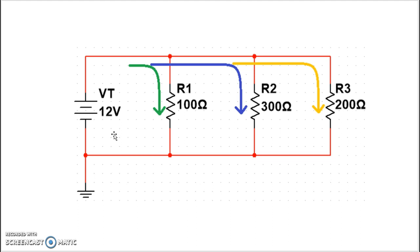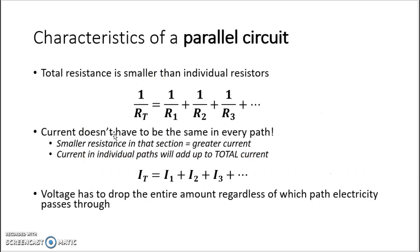Some characteristics of a parallel circuit: with series resistors, we added them up — 100, 300, and 200 ohms gave us 600 ohms total. In parallel, the resistance is actually smaller. The mathematical relationship uses the reciprocal formula: one over the total equals the sum of one over each resistor. So starting with 100, 300, and 200 ohms, we'd expect something in the neighborhood of 50 ohms — smaller than any individual resistor.